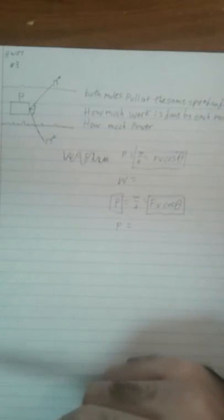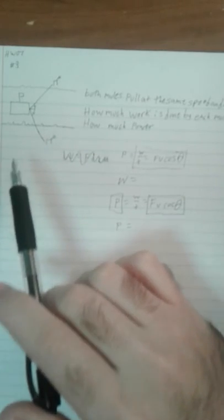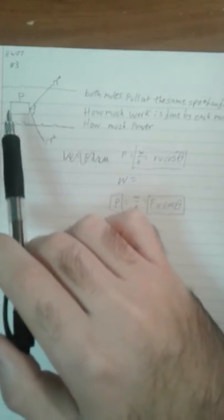For my pencast, I did problem number three. The question is, given this scenario, two moles pull a boat at the same speed and angle. How much work is done by each mole, and how much power? I was not given any numbers, so I just have to solve for the letters.